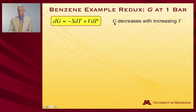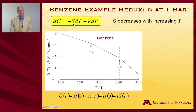The free energy decreases with increasing temperature because we know that entropy is always positive for a substance by the third law of thermodynamics. So if one plots the free energy as a function of temperature, as we increase the temperature the free energy goes down for the solid. We hit the melting point, at which point the entropy of the liquid is larger than that of the solid.